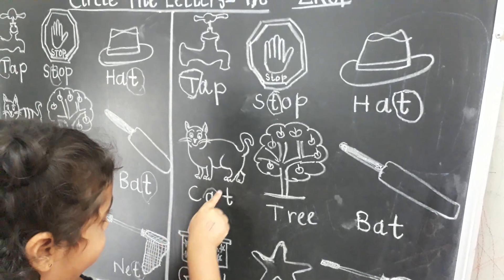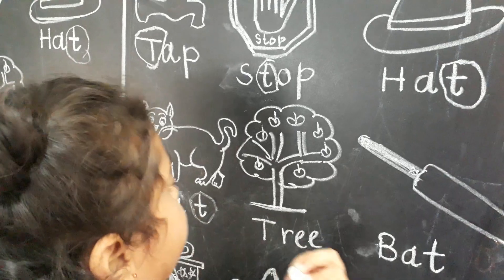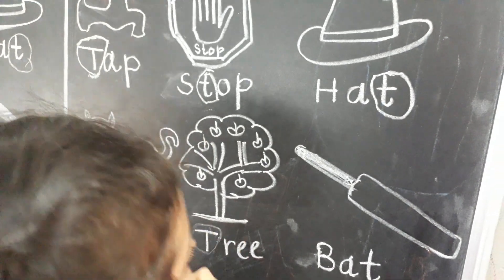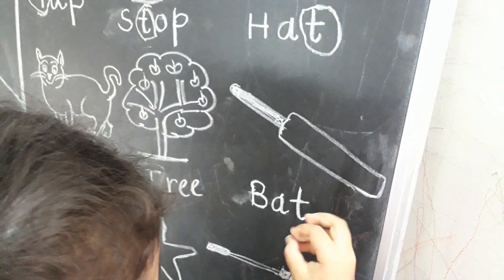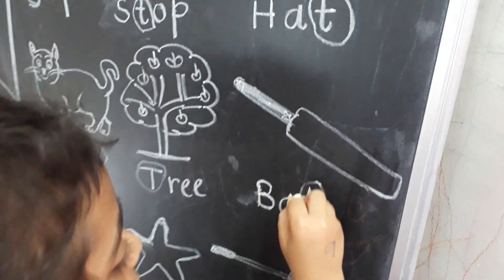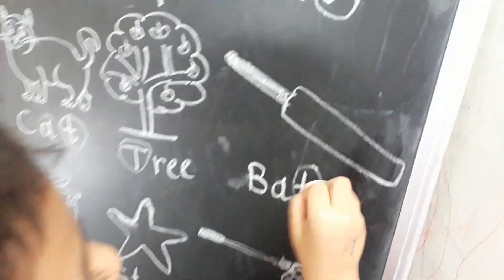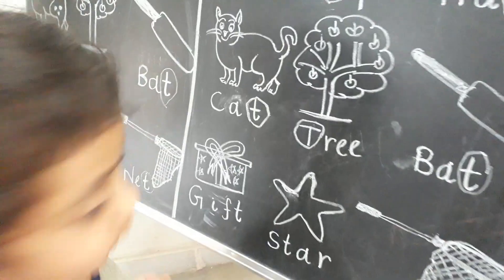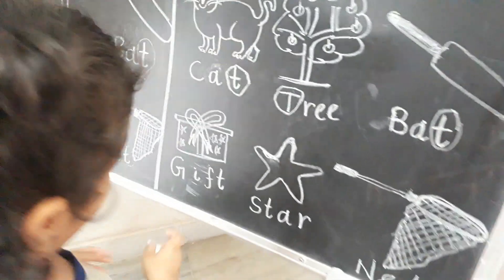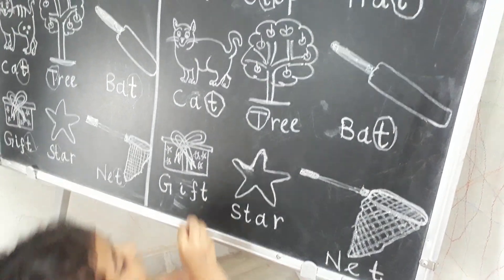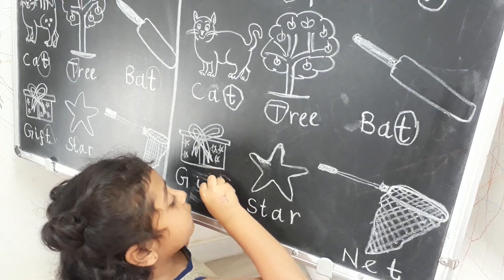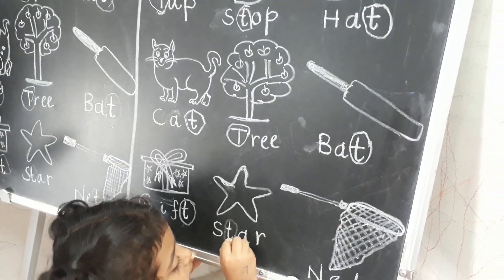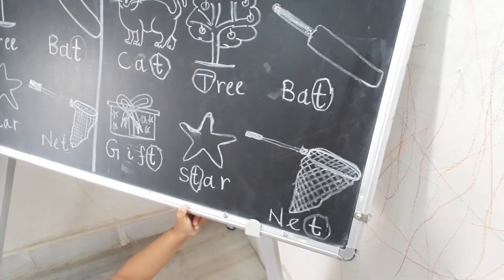Letter T. Good job, Shreya. Awesome. This is capital T or small t, Shreya? This one. Say loudly. Small. Yes. This one? Small. This one? Small. Good. Good job, Shreya. Good job, Shreya. Good job. Okay, good job, Shreya.